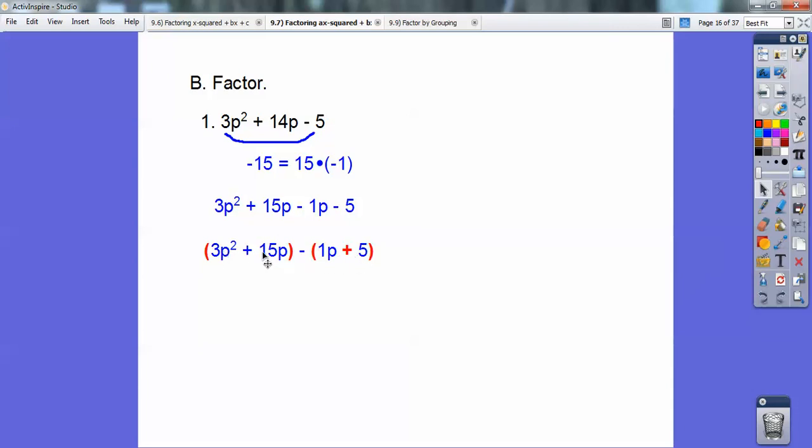I can pull a 3p out of these guys, and I can pull a 1 out of these guys. And watch what happens. I get a common factor, p + 5.